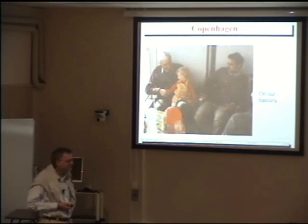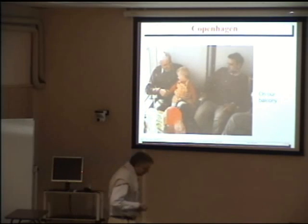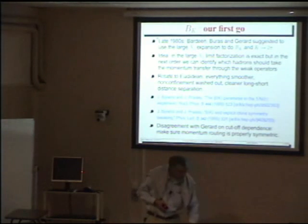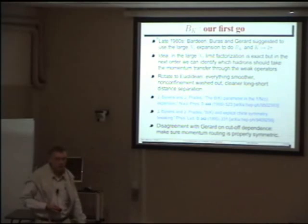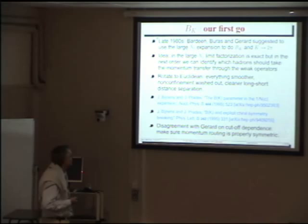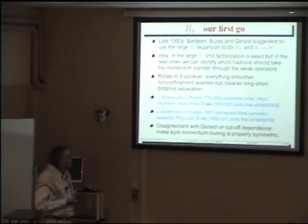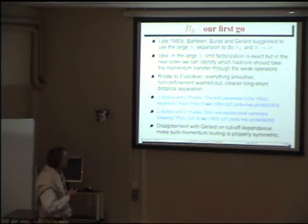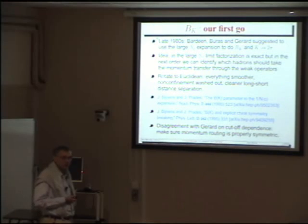That was quite some time ago — this thing is turning 18 next month, so you can see how long back we go. If there is one number I would associate with Chimo, I would say it's B_K — the kaon B parameter. It was his first big work. We published at least three different estimates of it. The idea is that in the large-N_c limit factorization is exact, but you can then try to calculate corrections. Following an idea of Bardeen, Buras, and Gerard, we rotated to Euclidean space because things tend to be a little bit smoother there.